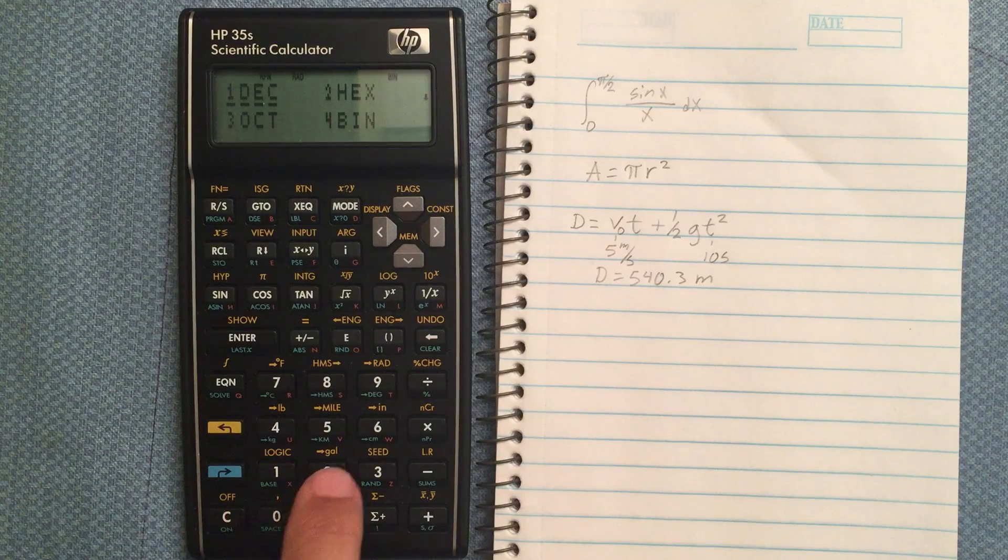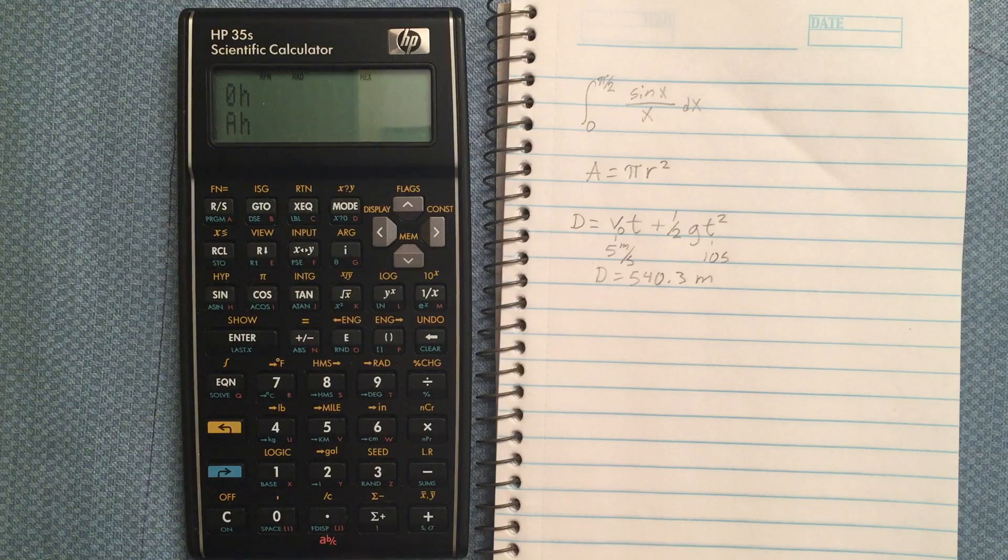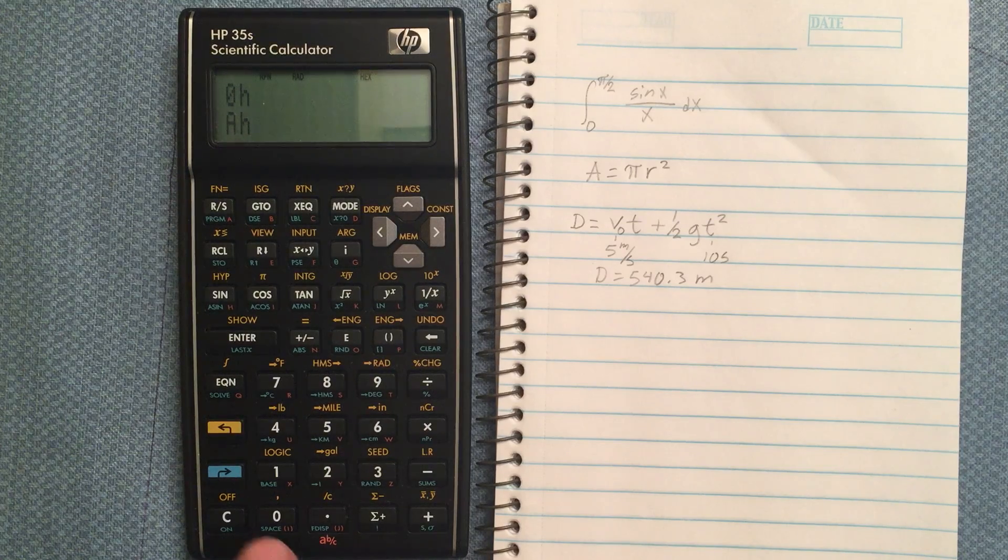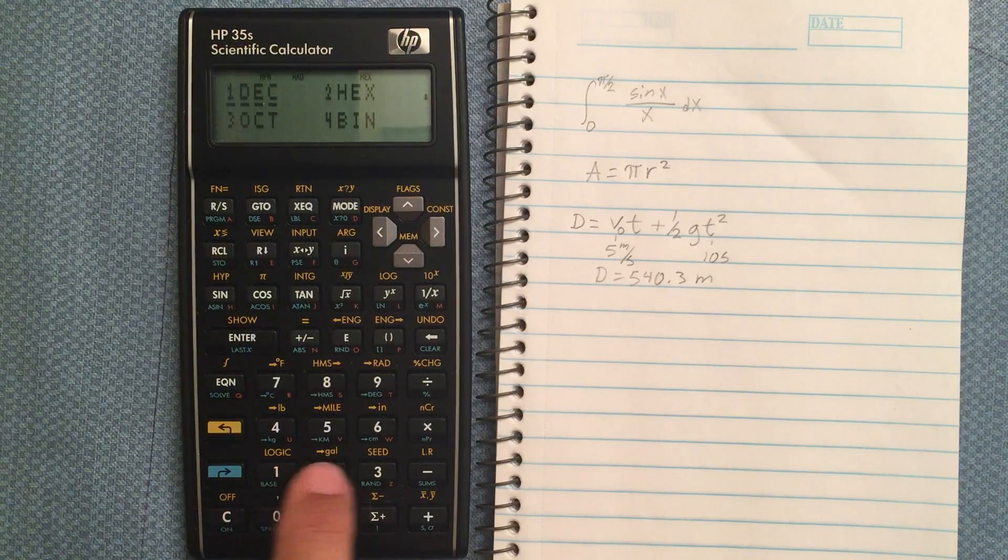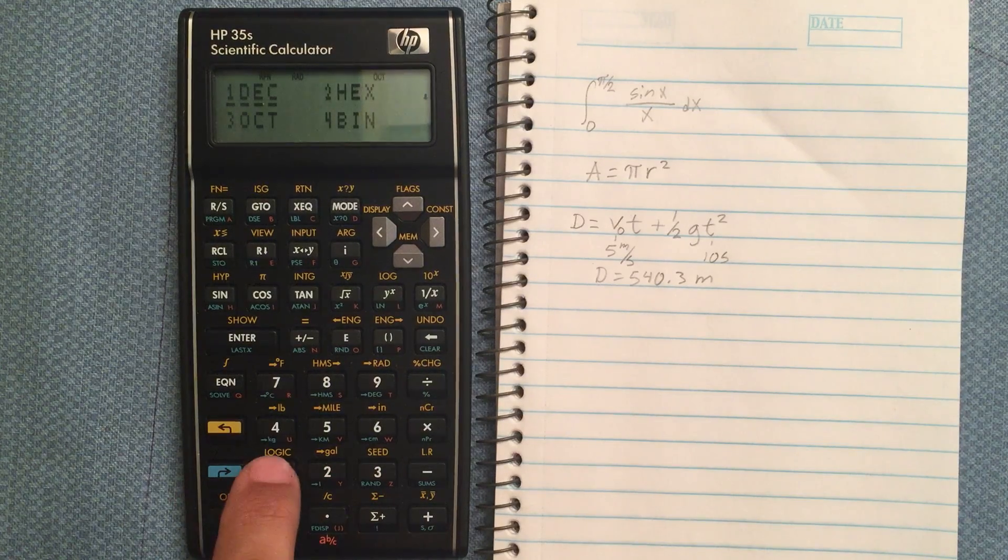We can shift that to hexadecimal too. And that's A in hexadecimal. Or to octal. That's 12 in octal. And back again to decimal.